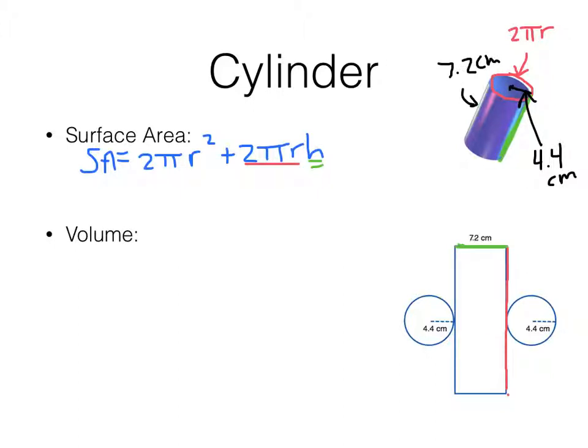2 times π times the radius squared, 4.4 squared, plus 2 times π times the radius 4.4 times the height of the cylinder 7.2. So now I need to multiply this out and then add it all together. I like to wait until the end with the part with the π. So I'm going to do 4.4 squared and then times 2, and that's 38.72π.